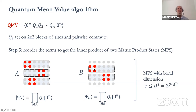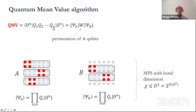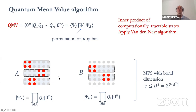By construction, the quantum mean value is the inner product between psi-A and psi-B, with a permutation of qubits in the middle needed because psi-A and psi-B are defined for two different linear orderings of qubits. Finally, since matrix product states are computationally tractable for any ordering of qubits, we can estimate the inner product using the Van den Nest algorithm. In the three-dimensional case, the algorithm is only slightly more complicated.